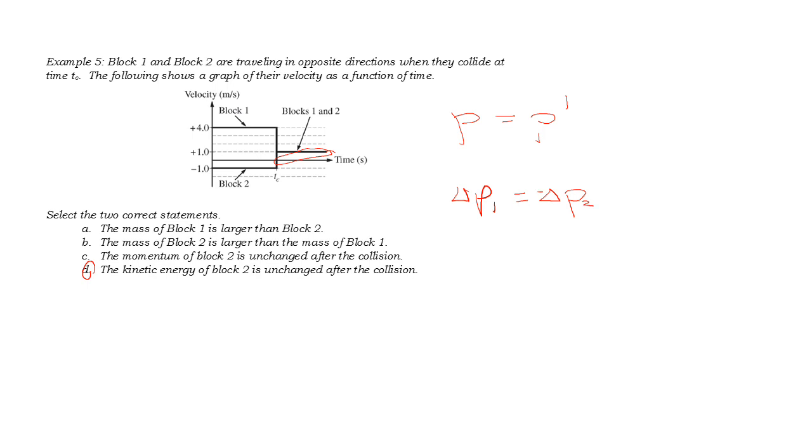So if block one had a bigger change in velocity, then it must have a smaller mass. And block two, which had a smaller change in velocity, must have had a bigger mass. So we know that the mass of block two must be bigger.